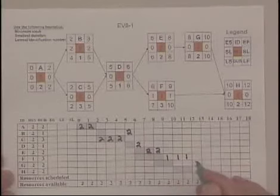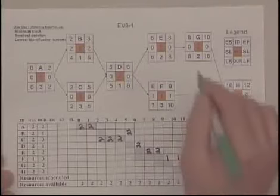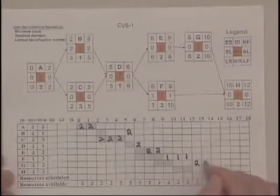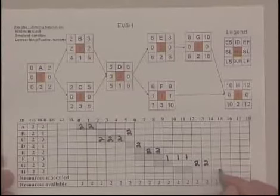Once F is done, we have the two tractors necessary to start G. And then finally, when G is done, we can go ahead and complete H.